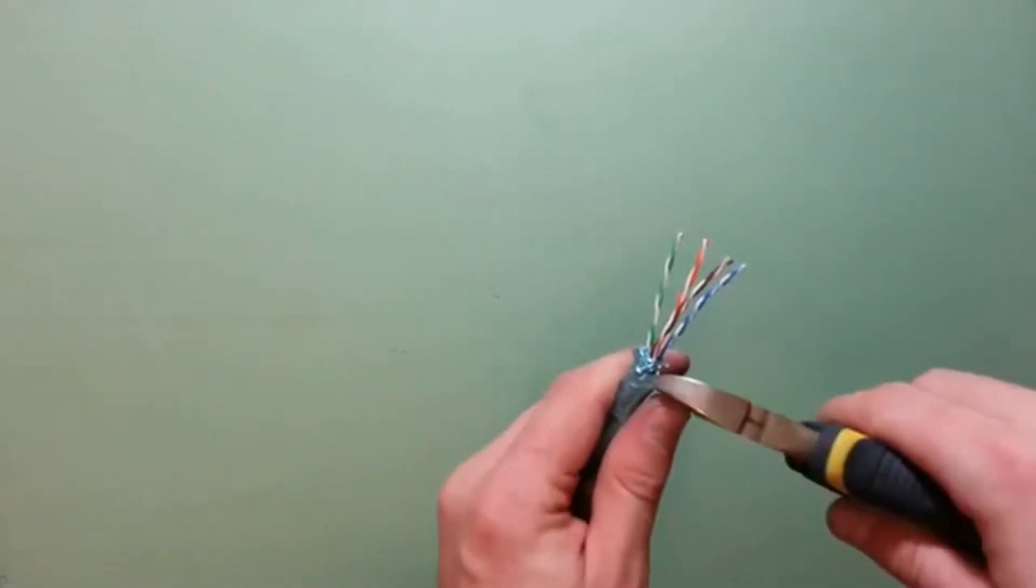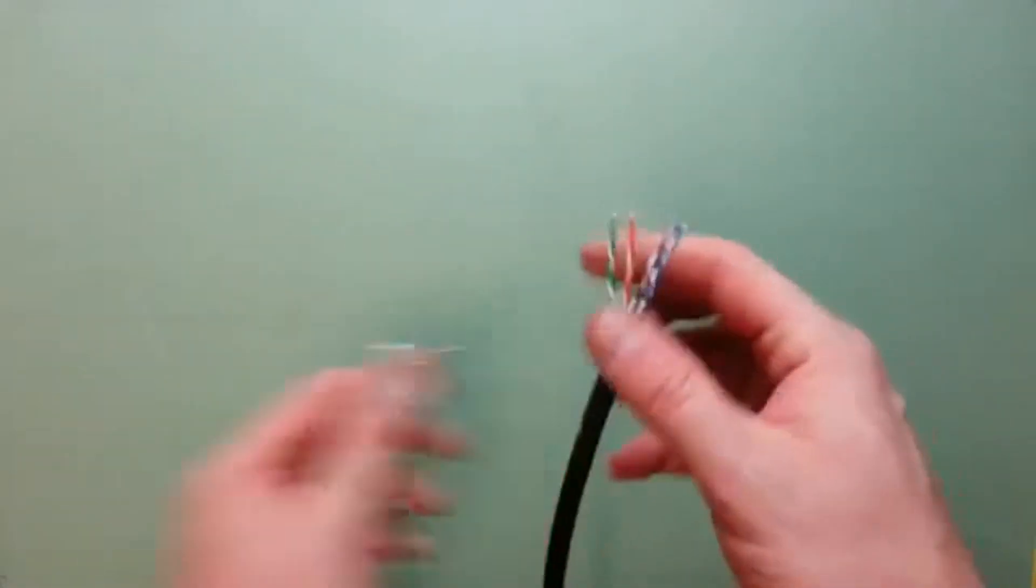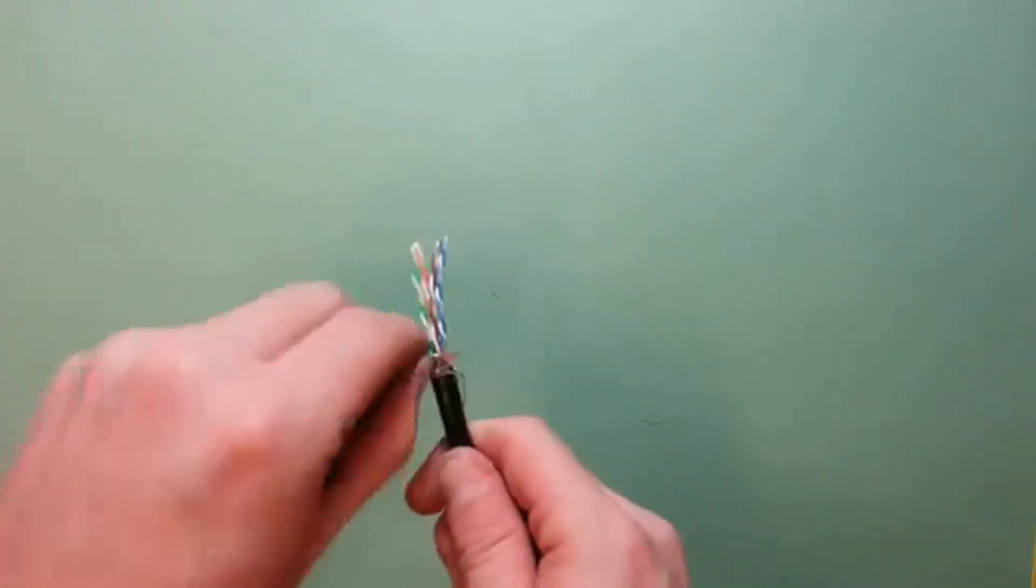Cut or tear away the foil shield, leaving just under 1 cm. Fold the foil shield back towards the exposed wires.